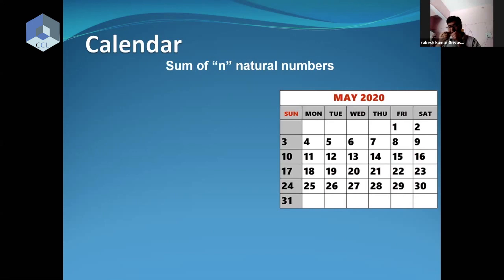This is the most beautiful thing I saw on the calendar: draw any line in the calendar, and whatever numbers it passes through will all be in AP. This diagonal line passes these numbers — they are all in AP. Please verify: 1, 7, 13, 19, 25, 31 will be in arithmetic progression.